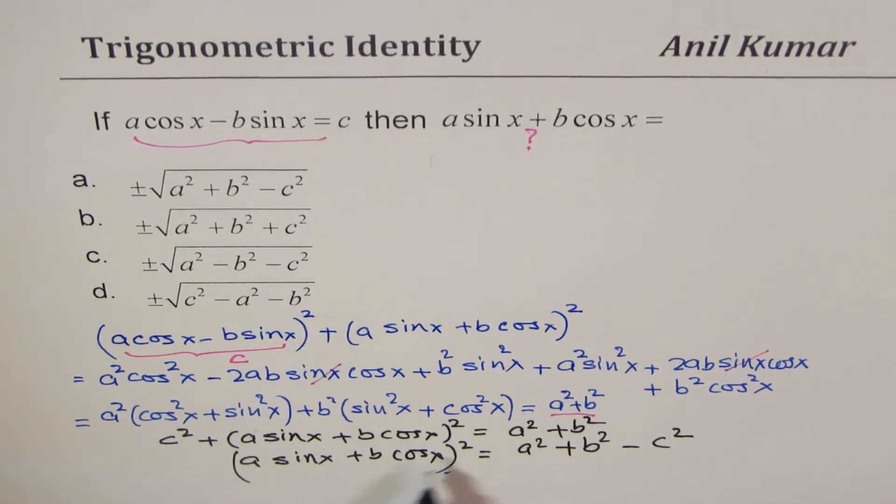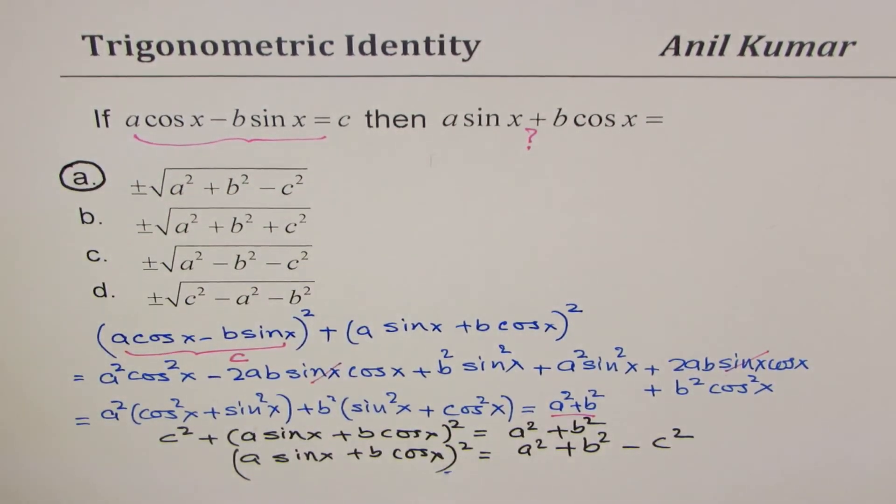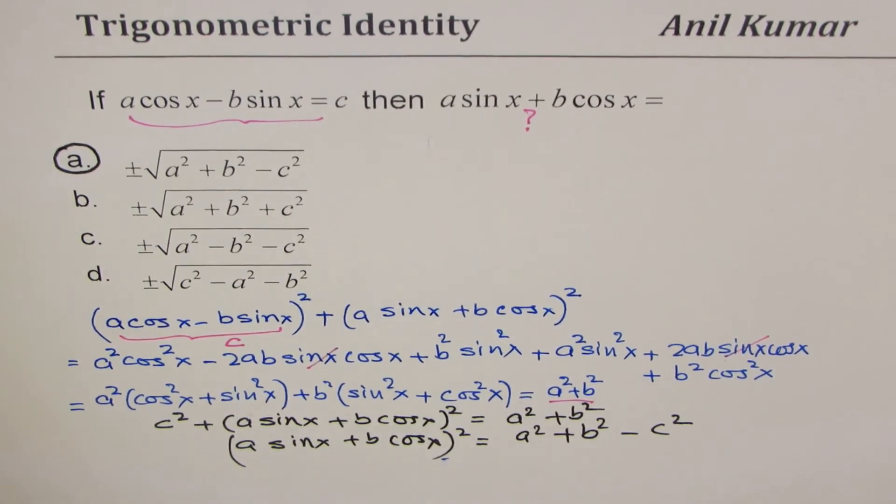And then of course, to find this term, we'll square root both sides. So the correct answer is square root of A square plus B square minus C square, which is option A for us. Perfect. So that is how you can actually find the solution. It's kind of tricky.